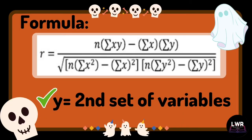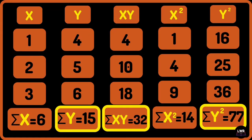The values of the second set of variables are also completed: the summation of y, which is 15; summation of xy, which is 32; and summation of y squared, which is 77.